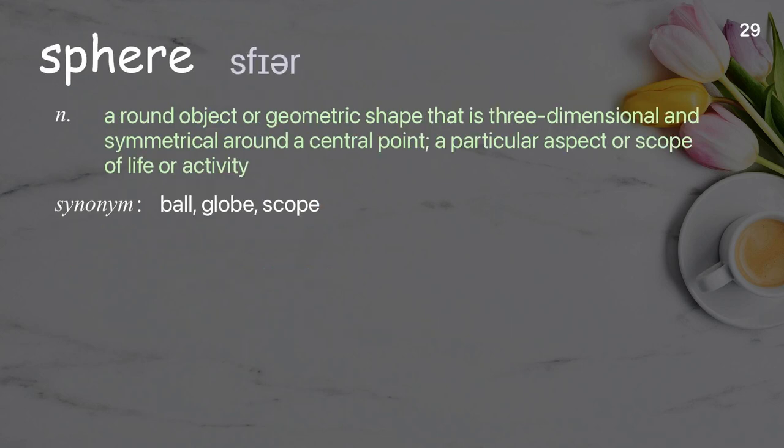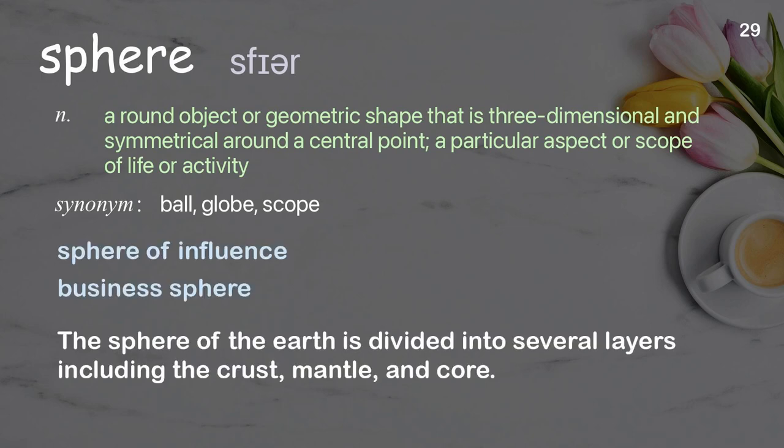Sphere: A round object or geometric shape that is three-dimensional and symmetrical around a central point, or a particular aspect or scope of life or activity. Examples: Sphere of influence, business sphere. The sphere of the earth is divided into several layers, including the crust, mantle, and core.